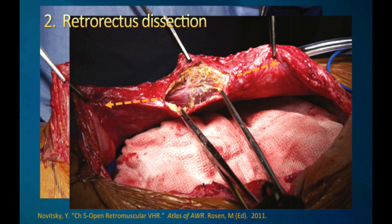If you're too far medial, you may end up dissecting into subcutaneous fat. You haven't burned any bridges with this maneuver, but just recognize that if you don't see that retrorectus muscle or some contraction of the muscle, you're in the wrong plane — continue your dissection a little bit more laterally until you achieve that retromuscular space.